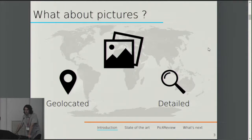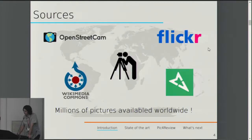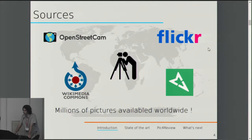So, why is using pictures interesting in order to do some ground surveying? It's because pictures can be geolocated. We have tags setting the latitude and longitude of the picture, so we know where the picture was taken. And it's a very detailed object — in the picture you can see everything like you would being there in real life. So it's like a gold mine of data. And now we have a lot of sources to find geolocated open-source pictures, like OpenStreetCam, Mapillary, Flickr, Wikimedia Commons, and also taking pictures yourself. So it makes millions of pictures available worldwide.